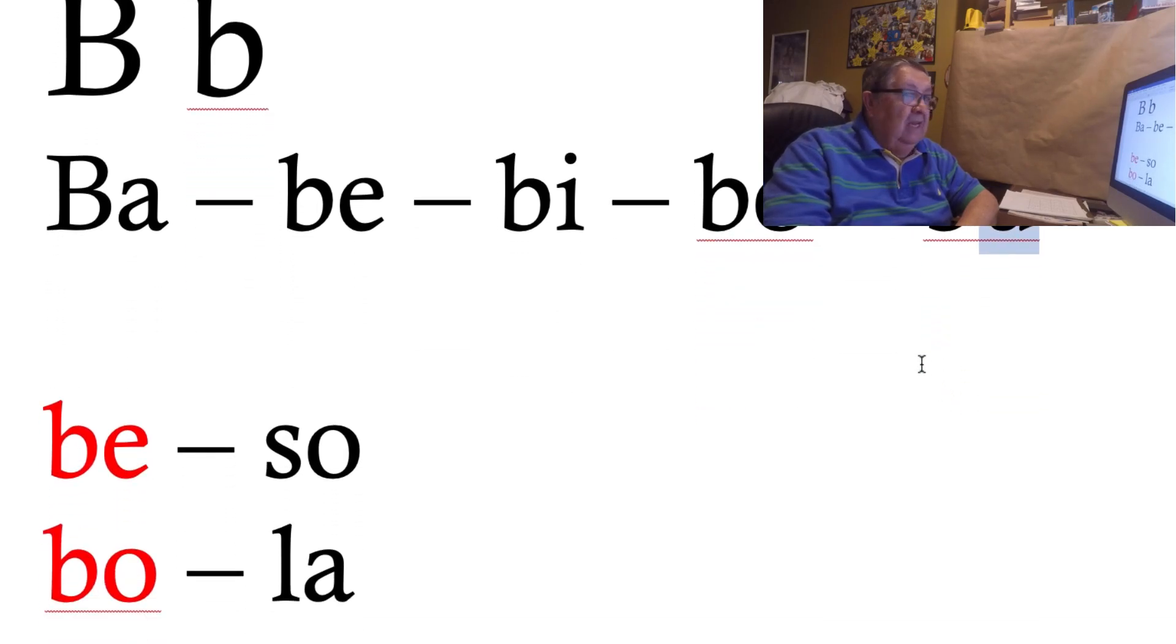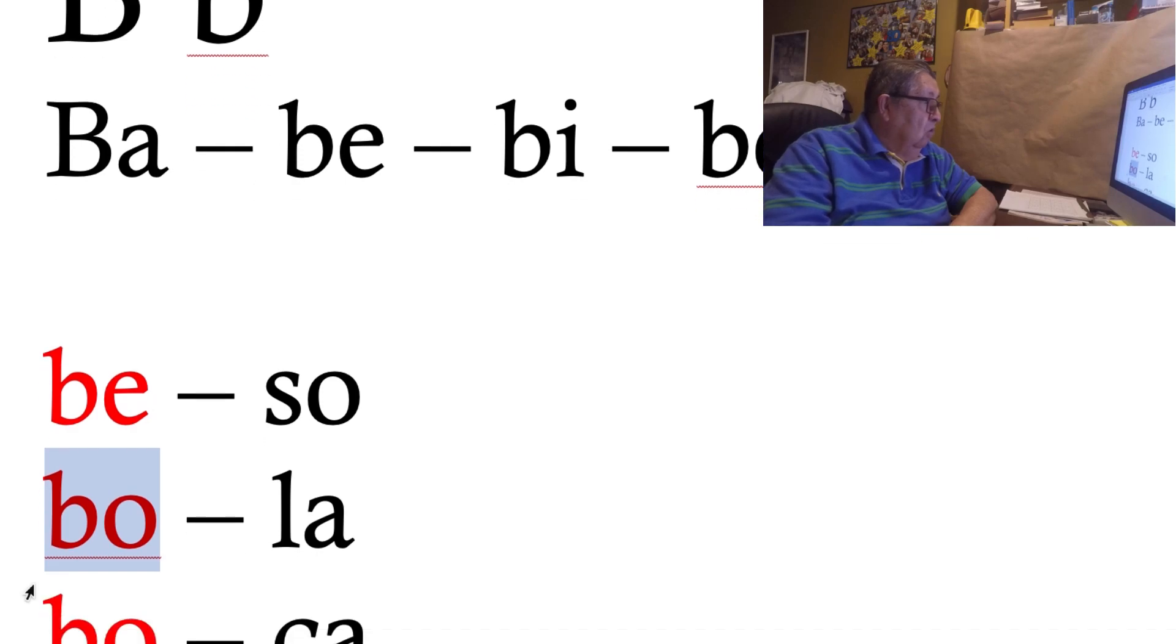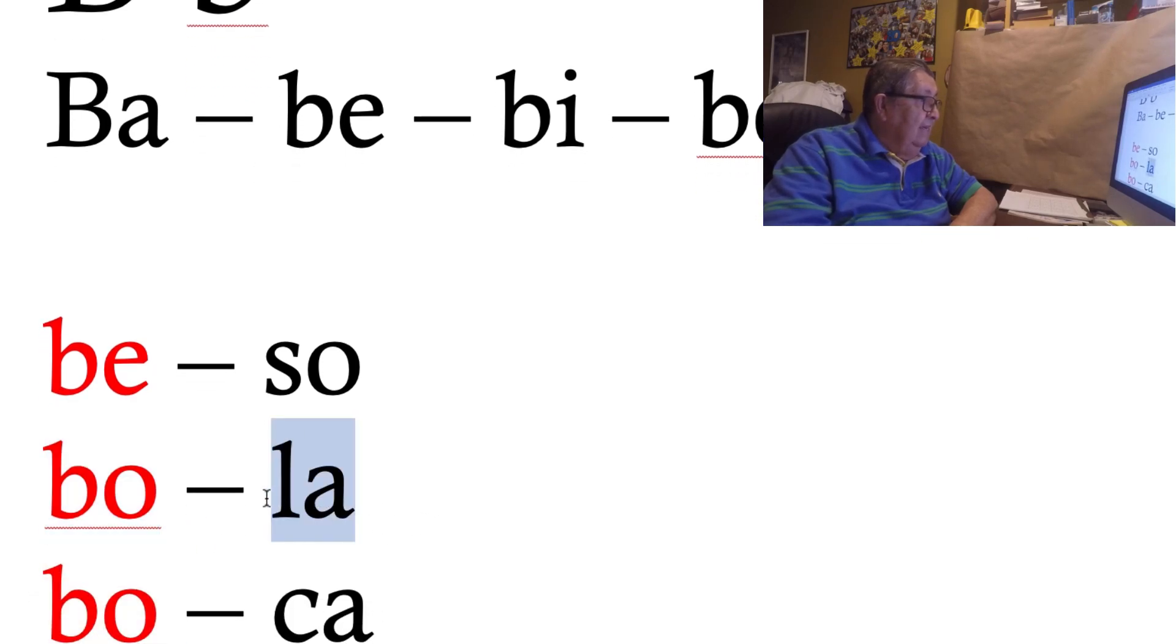Entonces ahora sílabas con sílabas colocamos, formamos palabras. La B con la E es be y la S con la O es so. Ya la S con la O ya la vimos anteriormente. Esto sería beso. La B con la O es bo y la L con la A es la. Juntos sería bola.